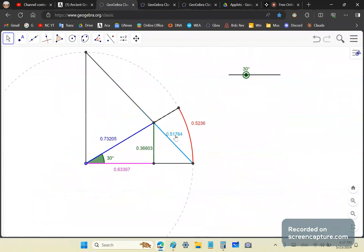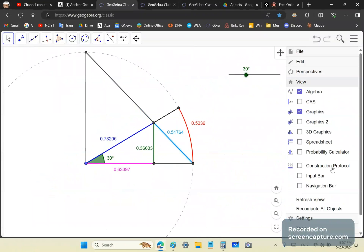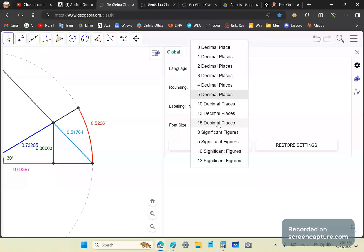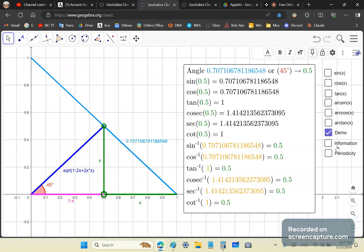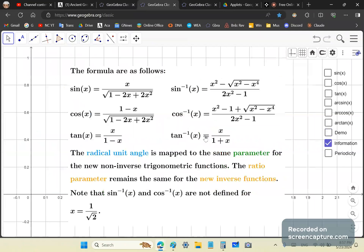You can do everything that you do with Newton's garbage so-called infinite series with my radical unit angle formulas. Once you find x you can find all the other ratios. That's basically the gist of this ingenious discovery of mine. Let's do one more example. Let's take angle 30. For angle 30 the radical unit angle is 0.51764. Let's expand that also to 15 decimals.